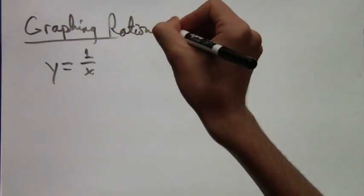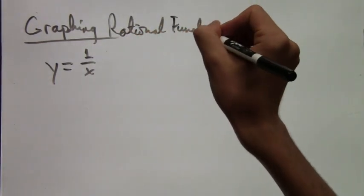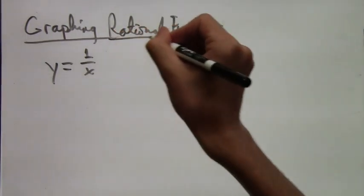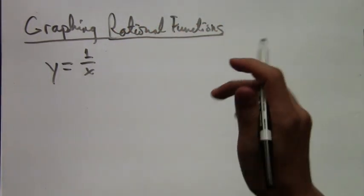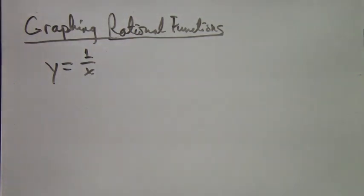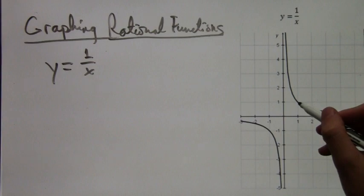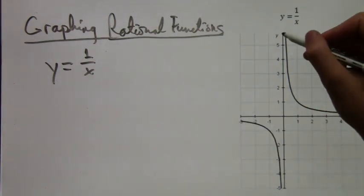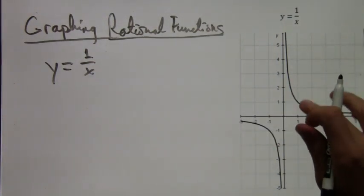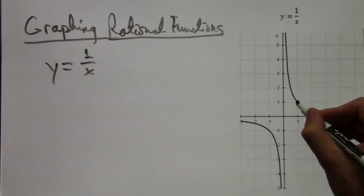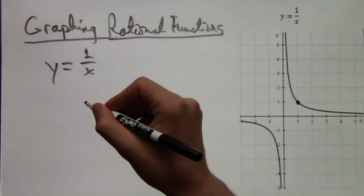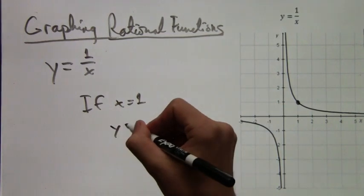So to learn how to graph rational functions first we're going to take a look at the graph of y equals 1 over x. This graph I'll just have the computer make for us. This is what it looks like. So it has these two parts. One of them in the third quadrant is just for negative x, and one of them in the first quadrant for positive x.